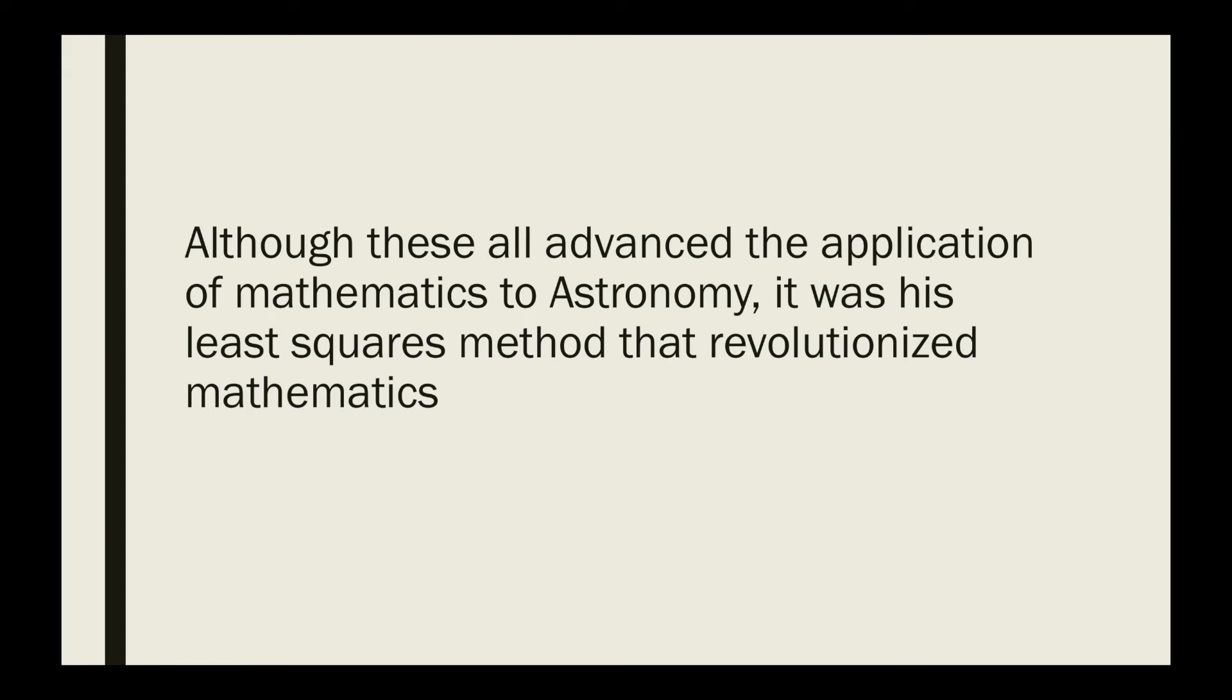Although his findings in these fields advanced the application of mathematics to astronomy, it was in fact his original use of the method of least squares that revolutionized mathematics. Four predictions as to the whereabouts of celestial bodies were published in the 1790s. Only one of these was proven correct, and this was Gauss's.